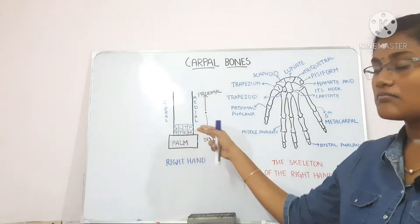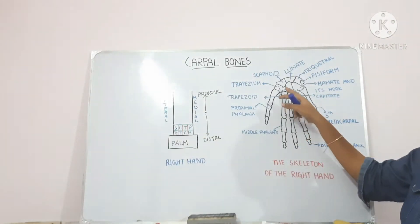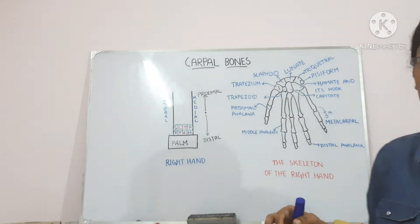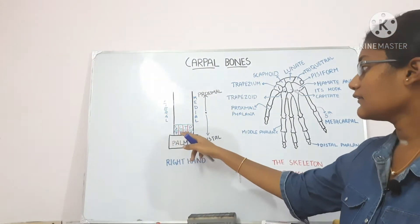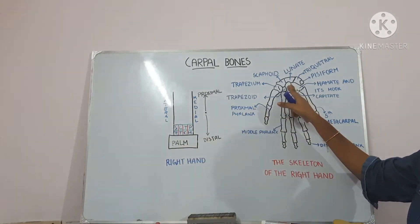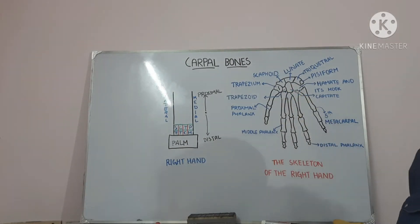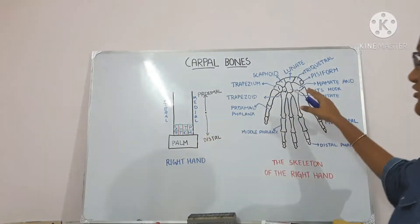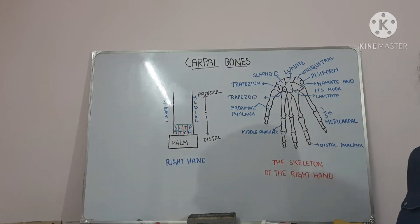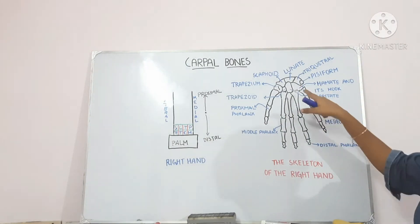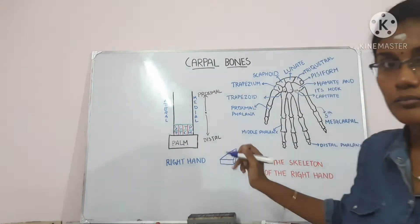Now let us talk about the trapezoid bone. The trapezoid bone is present over here and its shape is like the shoe of a baby. The capitate bone is present over here — it is the largest bone with a rounded head. The hamate bone is present over here and it is wedge shaped and it has a hook at its base. This is the hook which is present at the base.